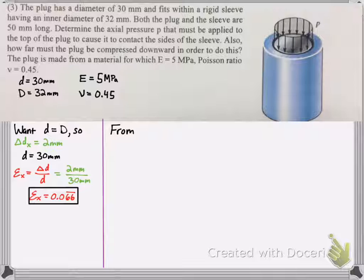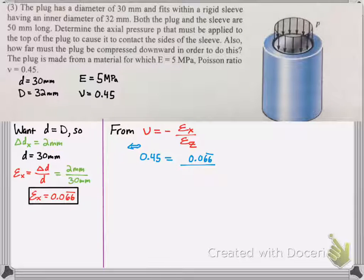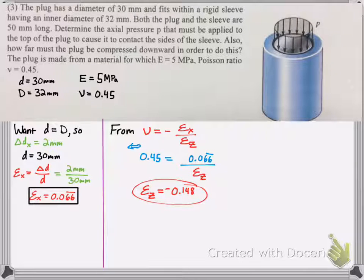So then we know from Poisson's ratio, we have the change in the x direction and the change in the z direction with a constant, and we know that constant is 0.45. And we also just figured out what εx is, the strain, or the epsilon x. So now we can find what epsilon z is. And that would be 0.148 by simple algebra there.